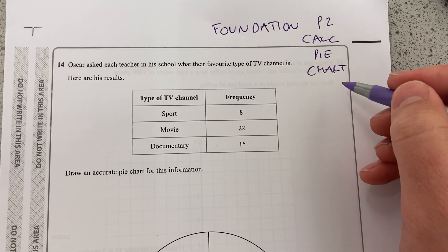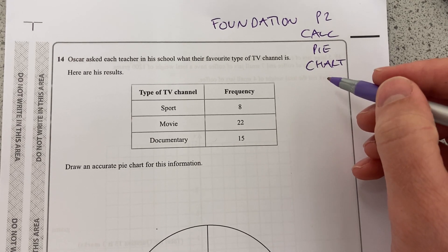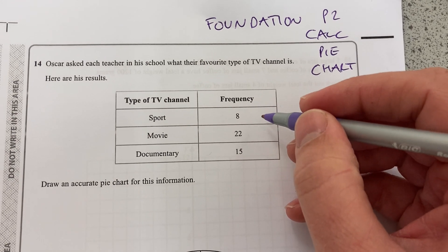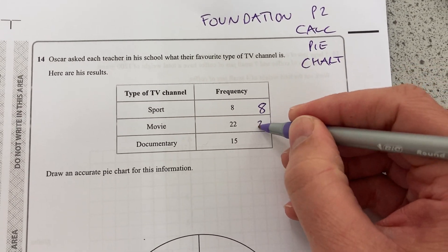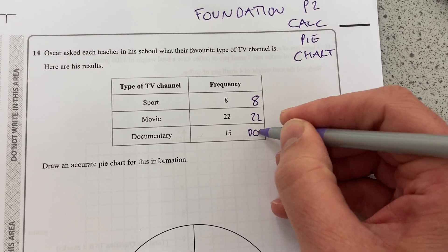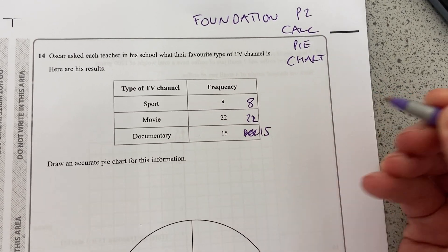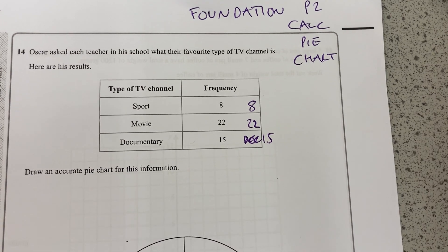Oscar asked each teacher in school what their favorite type of TV channel is, and here are his results. Sport is 8, movies is 22, and documentaries is 15. I don't know why I wrote that. Documentaries is a documentary.